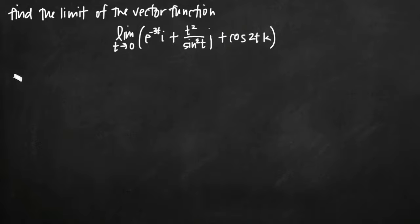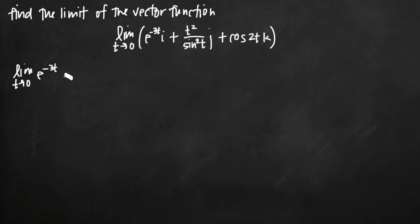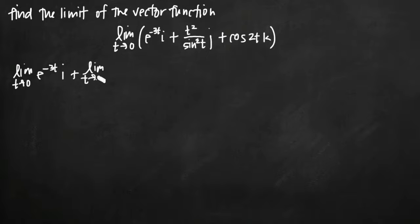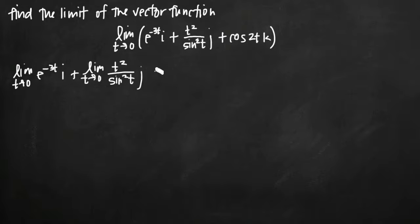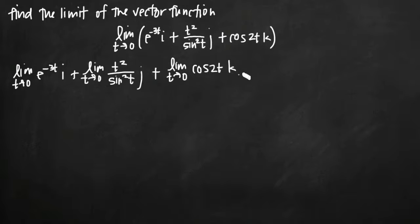Here's what that's going to look like. We take the limit as t goes to zero of e to the negative 3t and multiply by i. Then we add the limit as t goes to zero of t squared divided by sine squared of t, multiplied by j. Then we add the limit as t approaches zero of cosine of 2t, multiplied by k.